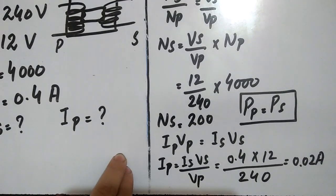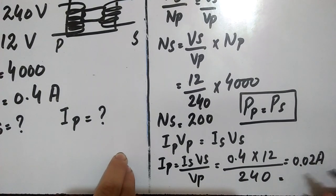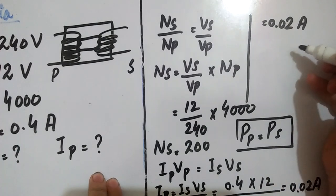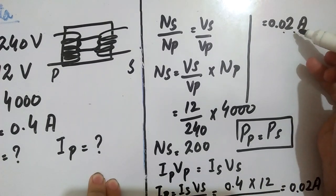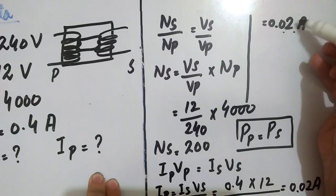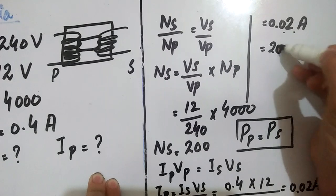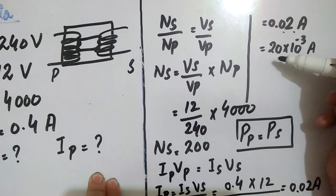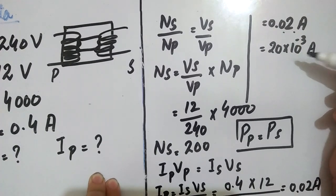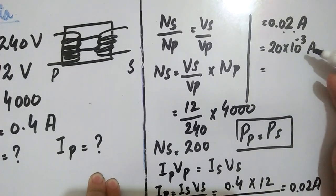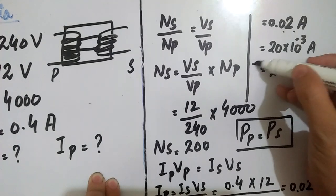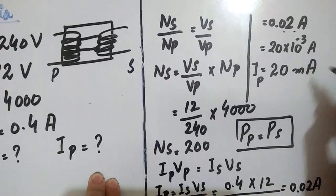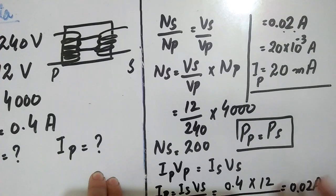Now 0.02 ampere — to write this in standardized form in milliamperes: milli means 10 raised to the power minus 3. To convert, move the decimal: 0.02 = 20 × 10 raised to power minus 3 ampere. Since 10 to the power minus 3 equals milli, we write Ip = 20 milliampere. When you convert a small value to a larger unit, the power of 10 becomes negative. So the current in the primary coil is 20 milliampere.